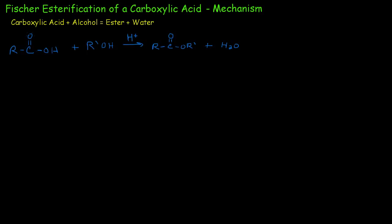In this video we're going to look at the Fischer esterification of a carboxylic acid and examine its mechanism. The chemical equation shows our carboxylic acid and our alcohol — in this case a primary alcohol — reacting in an acidic environment to produce our ester and water as a byproduct.